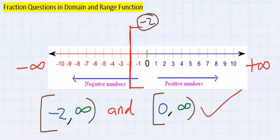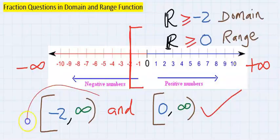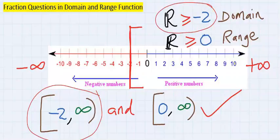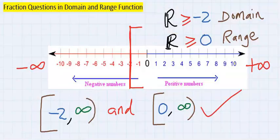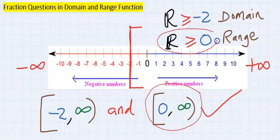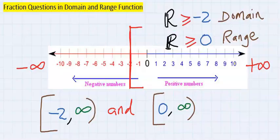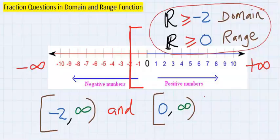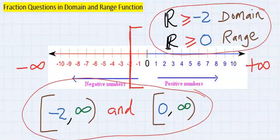This is our answer. Another way we can write this is all real numbers greater than or equal to minus two for the domain. And for the range, we can rewrite it as all real numbers greater than or equal to zero. This is the inequalities notation. And this is the interval notation. Both are correct.